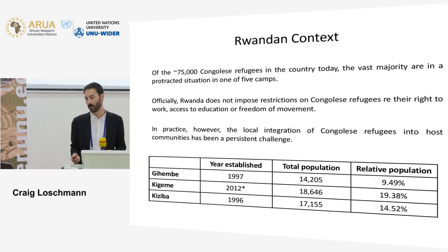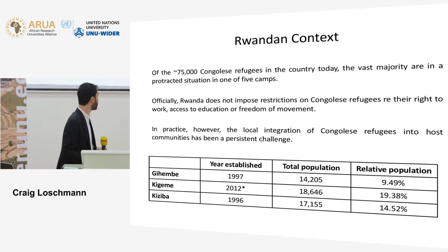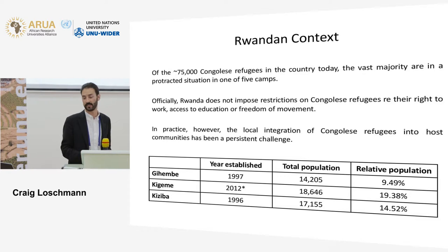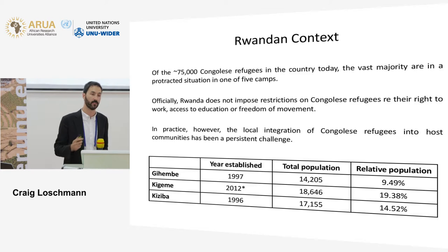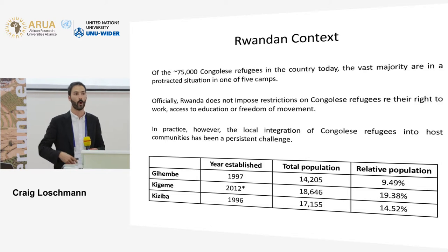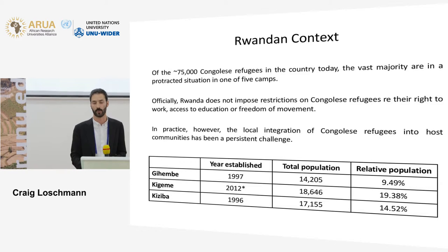The three refugee camps we are looking at are Gahembe, Gihembe, and Kiziba. Gihembe was opened in 1997, Kiziba in 1996. Kiziba has a little asterisk because it was originally opened in 1995 for the Burundian refugee population, then decommissioned in 2009 when the Burundian population returned, but the Rwandan government decided to reopen it due to a new influx of Congolese refugees from fighting in the North and South Kivu area around that time.